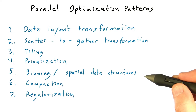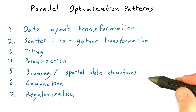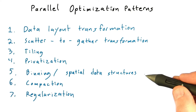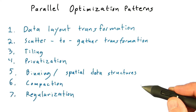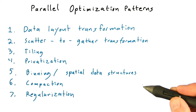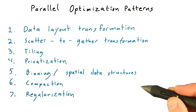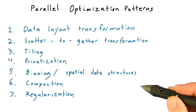Binning in spatial data structures, so that we can reduce the amount of input that's necessary to look at for a given output. Compaction, so that we can avoid processing inactive inputs and process more efficiently on a sparse set of inputs.